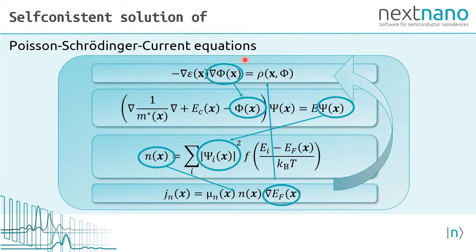So we need a self-consistent solution of the Poisson, Schrödinger and current equations. The nonlinear Poisson equation calculates from the charge density the electrostatic potential. The electrostatic potential enters into the Schrödinger equation where we obtain the energy levels and the wave functions. The wave functions get occupied using the quasi Fermi level and a Fermi Dirac distribution function to get the quantum density.